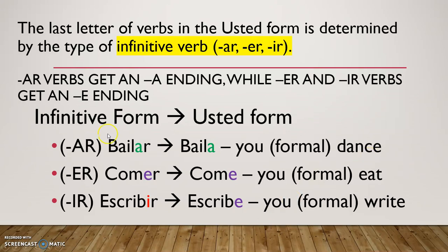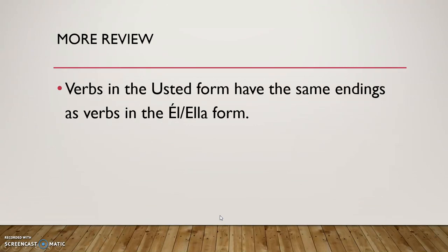Here's the infinitive form and the usted form. Bailar becomes baila. Comer becomes come. And escribir becomes escribe. If this looks familiar, it's because it is. Verbs in the usted form have the same endings as verbs in the él and ella form. You can almost think of this as a way of saying you that uses the third person as a form of respect — it's like you're distancing yourself from the person a little bit. You don't want to address them too directly, so you're talking about them in third person: usted.